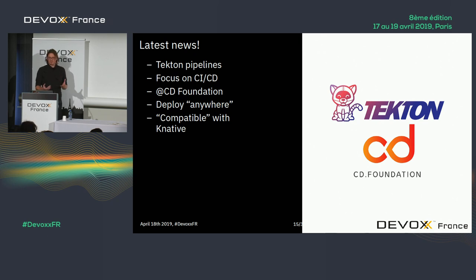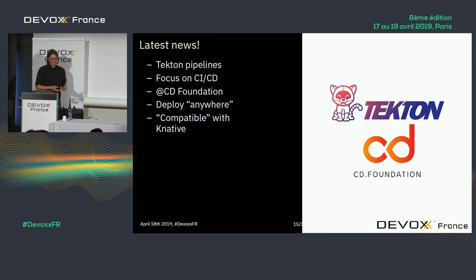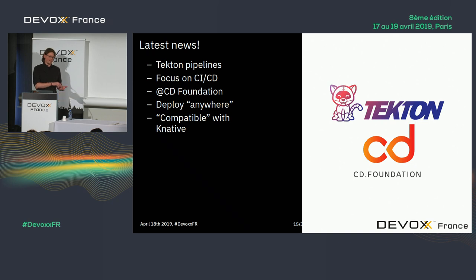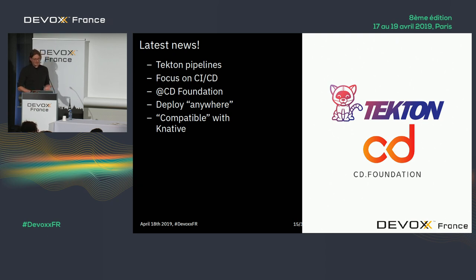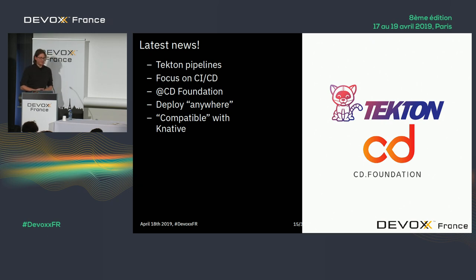The focus of Tekton is CI/CD pipelines, and the project is also in the newly created Continuous Delivery Foundation, which is part of the Linux Foundation, along with Jenkins, Jenkins-X, and Spinnaker. Tekton allows you to create pipelines that help you deliver or deploy your application and services anywhere — not necessarily on Knative or even Kubernetes. There are specific integrations between Tekton and Knative that I'll show in the next few slides.